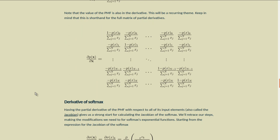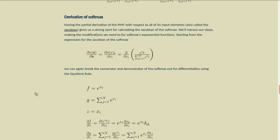Now to take this one step further and get the derivative of softmax. Having the partial derivative of the PMF with respect to all of its input elements, this is also called the Jacobian, gives us a strong start for calculating the Jacobian of the softmax. We'll retrace our steps making the modifications we need for the softmax's exponential functions. So starting from the expression for the Jacobian of the softmax, we'll substitute in e to the x sub k over the sum of e to the x sub j for our probability mass function. We'll use sigma of x sub k to represent the softmax of element k and we'll use sigma of x to represent the whole array of softmax results for the entire set of x's.